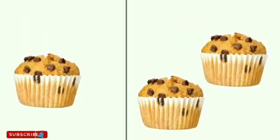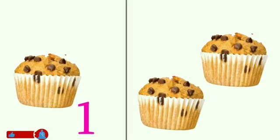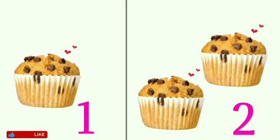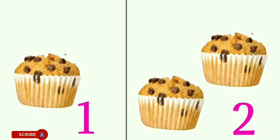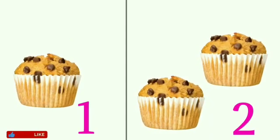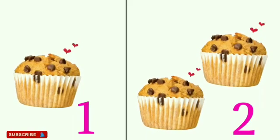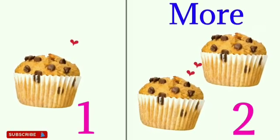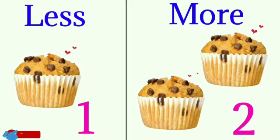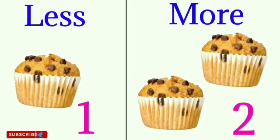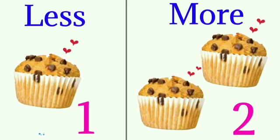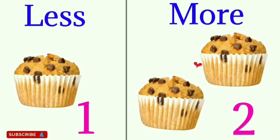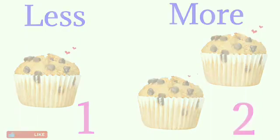These are cupcakes. The first group has one cupcake and the second group has one, two — two cupcakes. Children, can you tell me which group has more cupcakes and which group has less cupcakes? Yes, the second group has more cupcakes and the first group has less cupcakes. One is less and two is more. One is less than the number two, and two is more than the number one. Thank you.